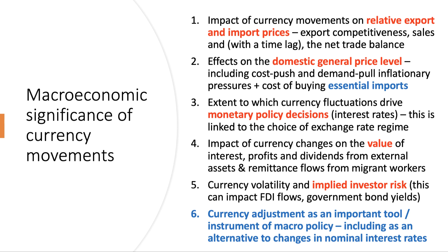Fifth: currency volatility and implied investor risk. For many countries the exchange rate is quite volatile — just a couple of days ago the Turkish Lira depreciated by around thirteen to fifteen percent. This volatility can impact the risk of investments. It might affect FDI flows, and if you're a bond investor and the currency is weak and volatile, that has implications for the yield you'd expect to get to cover that risk on new government bond issues. Countries with stable exchange rates, low inflation, and good policy benefit from cheaper bond yields, making it easier and cheaper for the government to borrow.